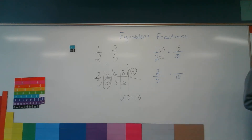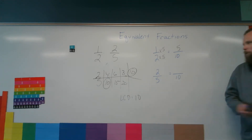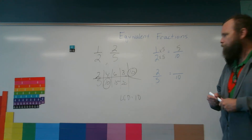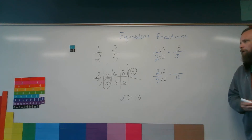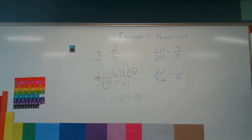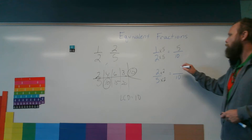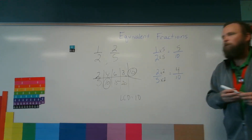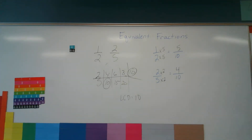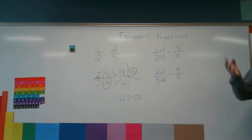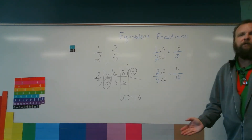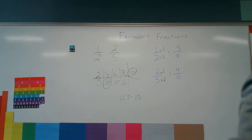Then I ask: 5 times what is 10? If I multiply my denominator by 2, I must also multiply my numerator by 2. And 2 times 2 is 4. So 1 half equals 5 tenths, and 2 fifths equals 4 tenths. Now if I were to add or subtract, I could do that because they have a common denominator. And I've changed the way the fractions were written, but I haven't changed the value of the fractions.